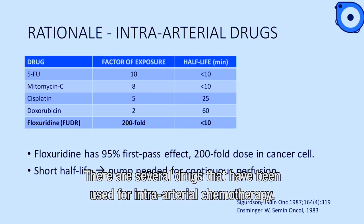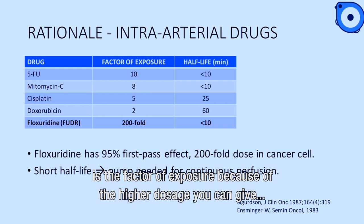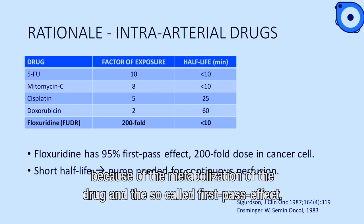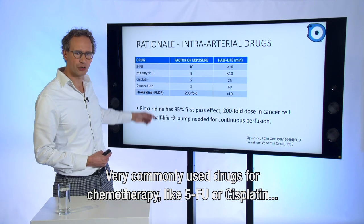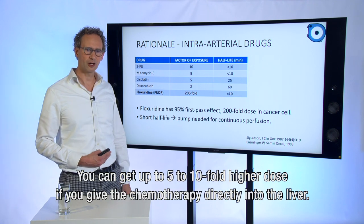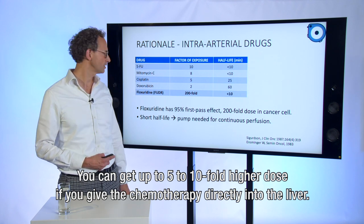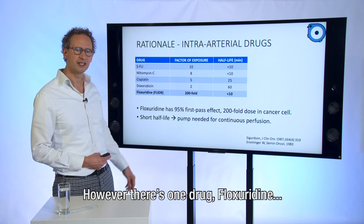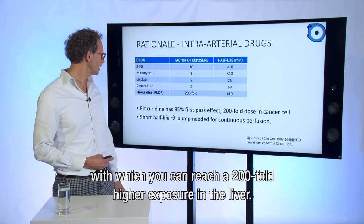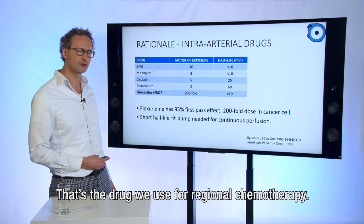There are several drugs that have been used for intra-arterial chemotherapy, and the main difference is the factor of exposure because of the higher dosage you can give due to the metabolization of the drug and the so-called first-pass effect. Commonly used drugs for chemotherapy like 5-FU or cisplatin can reach up to five or tenfold higher doses if given directly into the liver. However, there's one drug, Floxuridin, which can actually reach a 200-fold higher exposure in the liver, and that's the drug we use for regional chemotherapy.